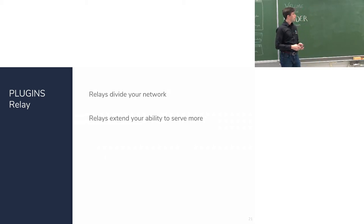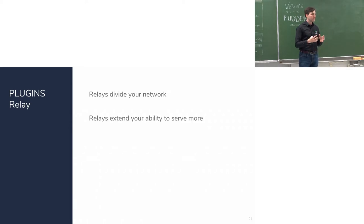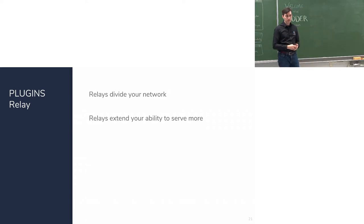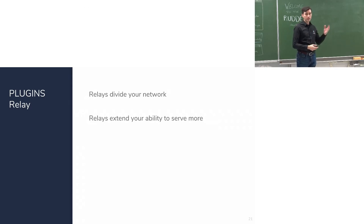The relay plugin existed before as a built-in feature but has now been made into a plugin. A relay is used to segment your network — it allows only streams from agents to the relay, and from the relay to the server, with no direct flow from nodes to the server. This means fewer ports to open in your firewalls, less rules, and better isolation of your infrastructure. Since relays serve all nodes directly, you can also scale Rudder to more nodes by adding more relay machines.